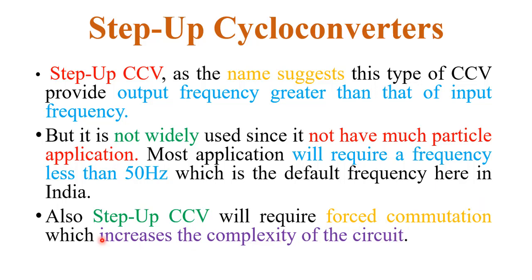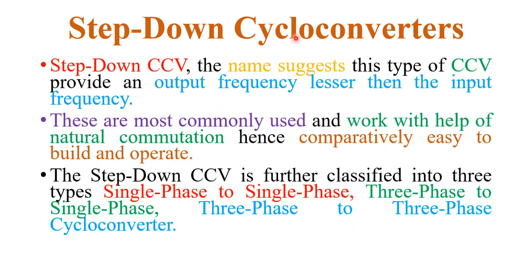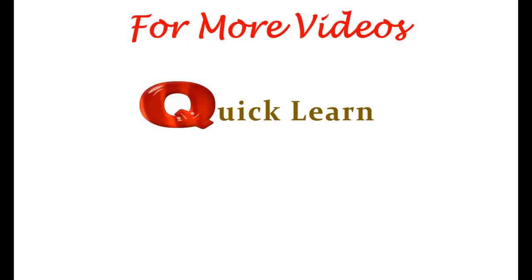The step-down cycloconverter, as the name suggests, provides an output frequency lower than the input frequency. This type is the most commonly used and works with the help of natural commutation, making the circuit comparatively easy to build and operate. The step-down cycloconverter is further classified into three types: single-phase to single-phase, three-phase to single-phase, and three-phase to three-phase. Thank you for watching this video — please like, subscribe, and share my channel.